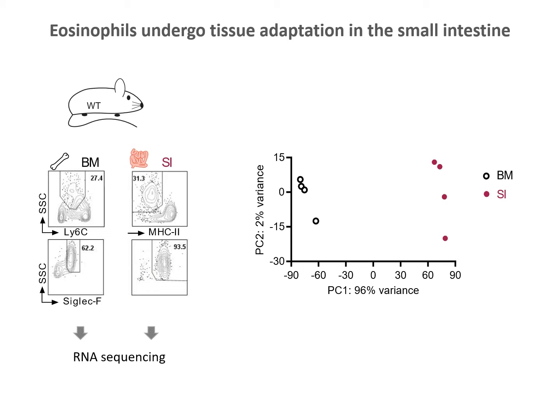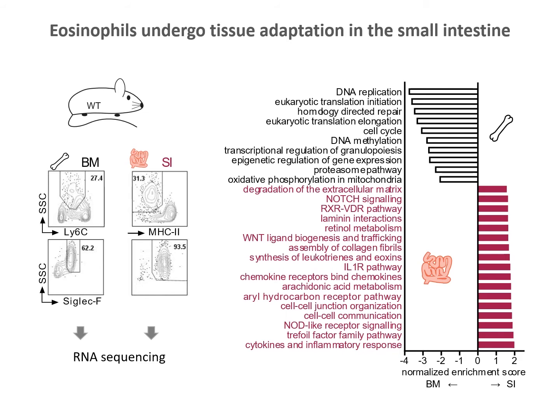First, we compared eosinophils from the bone marrow to those from the small intestine by RNA sequencing, revealing large transcriptional changes. Small intestinal eosinophils upregulated pathways involved in cell-cell interaction, extracellular matrix remodeling, immune response genes, and the aryl hydrocarbon receptor pathway.